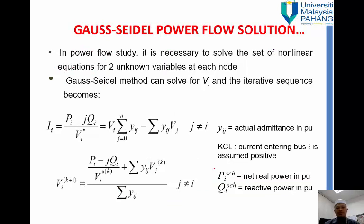So Gauss-Seidel method can be solved for Vi and the iterative sequence becomes, if you remember that we have constructed our equation here where Ii equals to Pi minus jQi divided by Vi conjugate. So we can rearrange this equation and we obtain our Vi for the next iteration equals to Pi minus jQi divided by Vi conjugate.